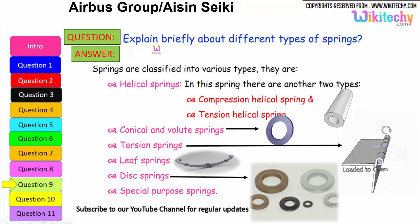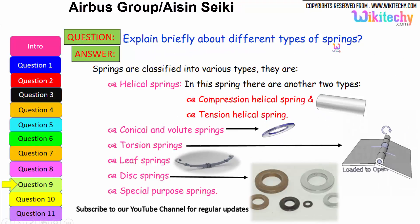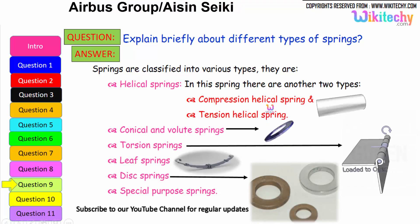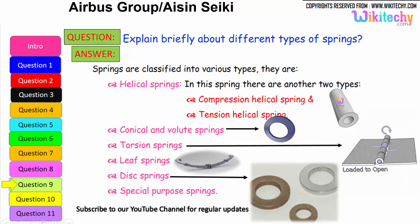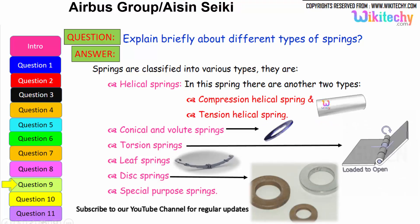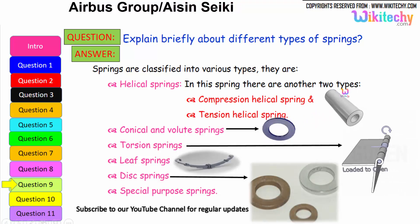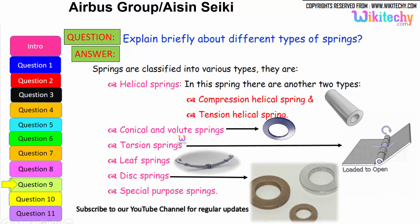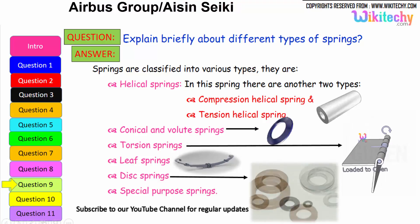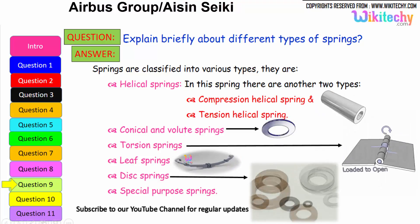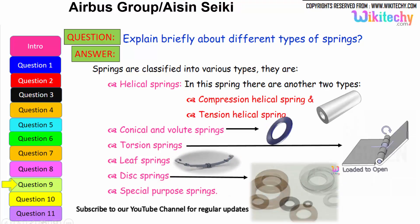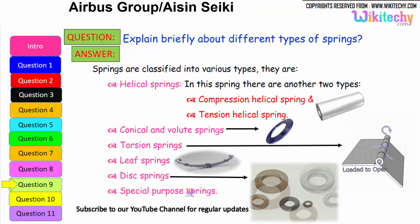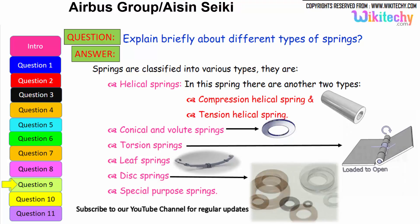Let us see briefly about the different types of springs. Springs are classified into various types: the first one is helical springs, which are further divided into compression helical springs and tension helical springs. The next one is conical volume springs, followed by torsion springs, leaf springs, and disc springs. There are also additional special purpose springs. These are all the different types of springs available.